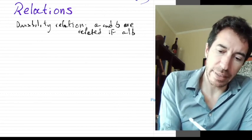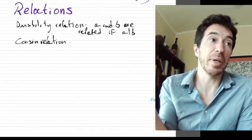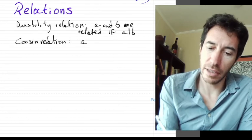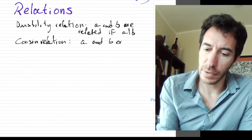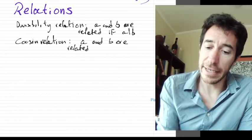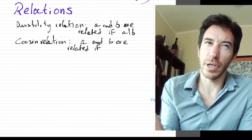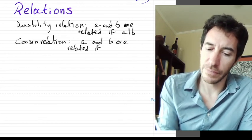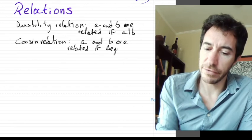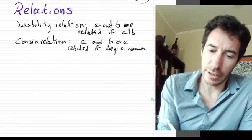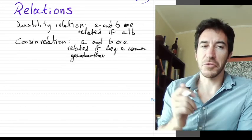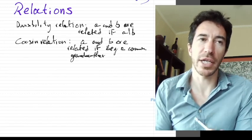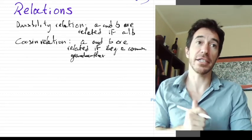We can talk about the cousin relation among people. A and B are related if they have a common grandmother. If two people have a common grandmother, we say they are related by the cousin relation.